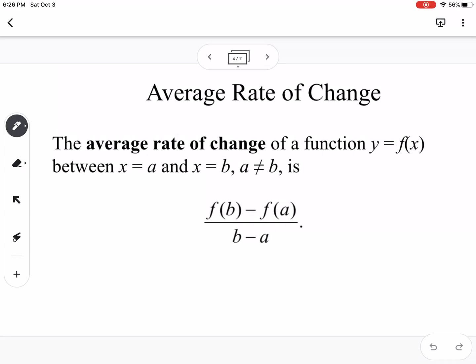So average rate of change, I always say, is a fancy way of finding the slope between two points. So if you have a graph where you have not necessarily a straight line, if you're trying to find the average rate of change between two points, you're finding the slope, so the change in y over the change in x between those two values. So it really is just saying the slope between the two points that you're selecting. So you're kind of ignoring the shape of the graph and finding the slope between those two points.